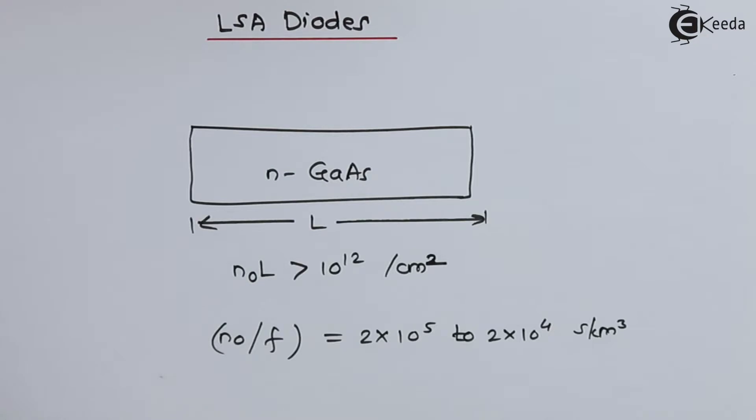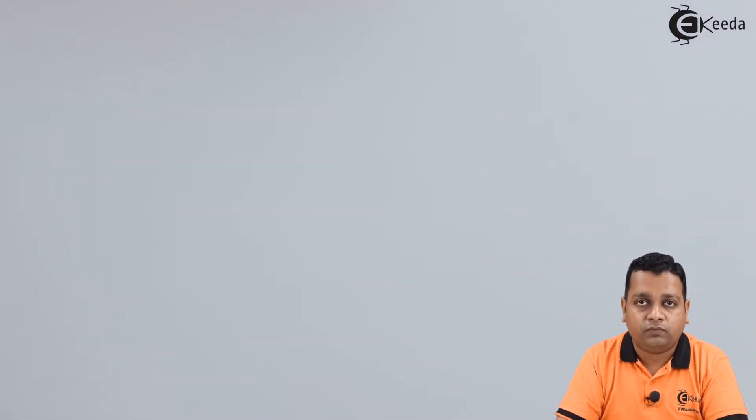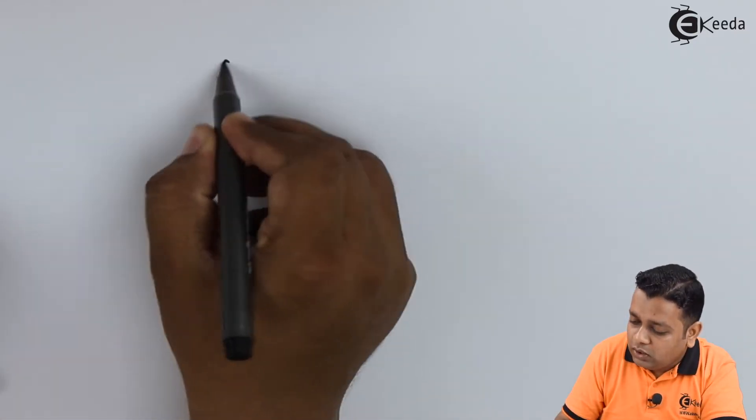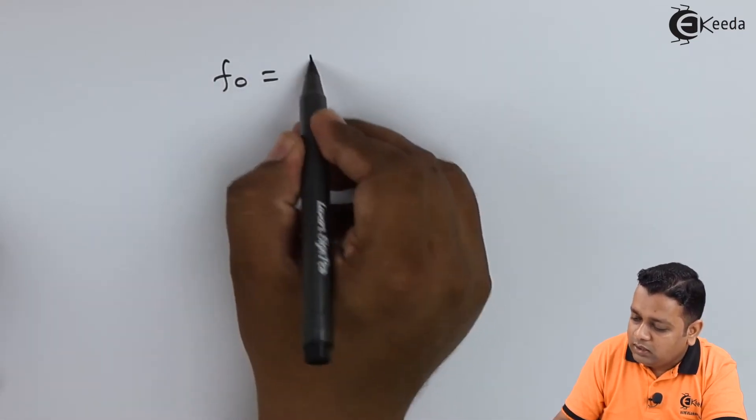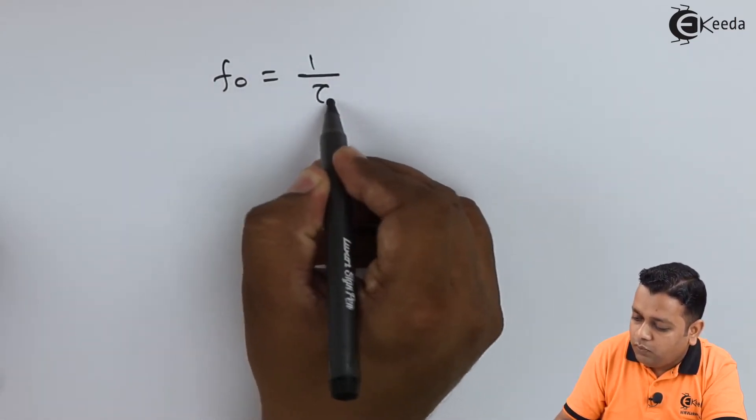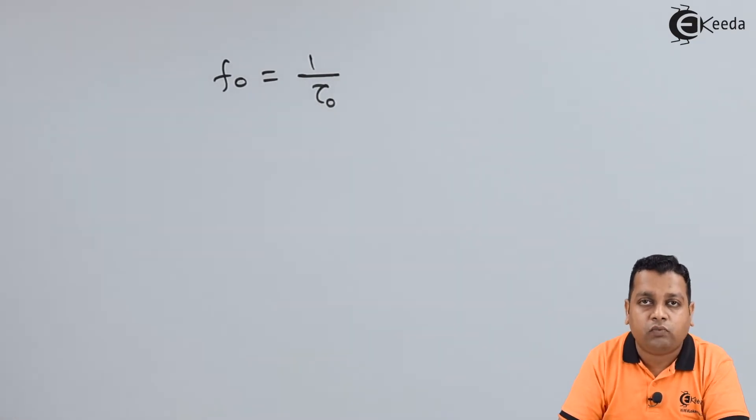The inventor of this LSA diode, which is a gun diode operated into the LSA mode, is Copeland. He discovered it by taking the gun diode operating into the LSA mode and kept it inside a resonator. The resonator is tuned to the resonant frequency represented as F0, and it is the ratio of 1 upon tau 0, the time duration for one cycle for the case of resonance.